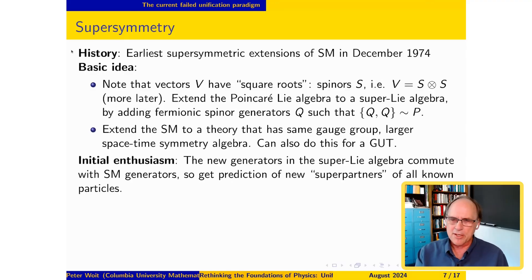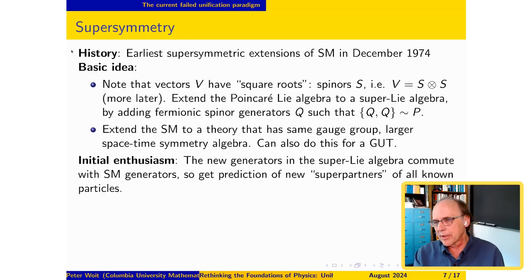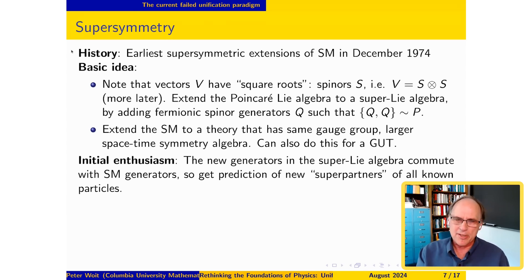The problem is that this beautiful new symmetry doesn't relate any two known things — it relates everything you know to something you've never seen before. Technically, this symmetry acts trivially on everything you know about. But you can then say this gives a prediction: we've only seen half the particles in the world, and every particle we know about is going to have a superpartner.